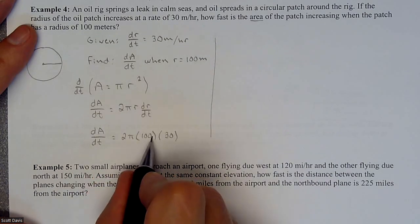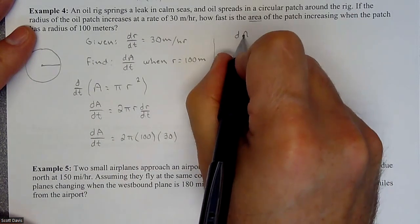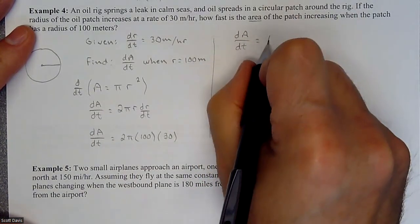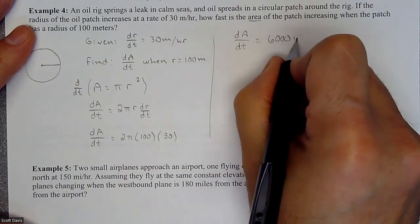Six with three zeros on it. So the rate at which our area is changing with respect to time is 6000π.